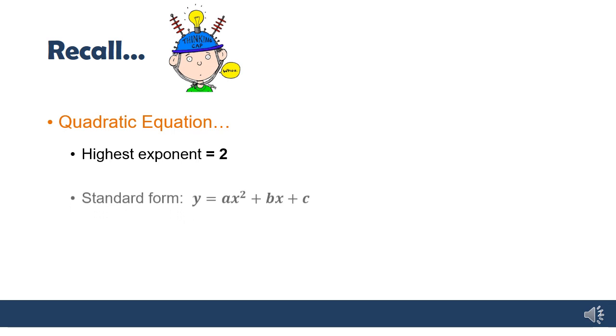So remember what we've talked about already in terms of quadratic equations. A quadratic equation is one where the highest exponent is 2, so you have x squared in the equation. Its standard form is y equals ax squared plus bx plus c. And if you were to graph a quadratic equation, you'd either get a positive parabola or a negative parabola. And we'll talk more about that when we do functions.